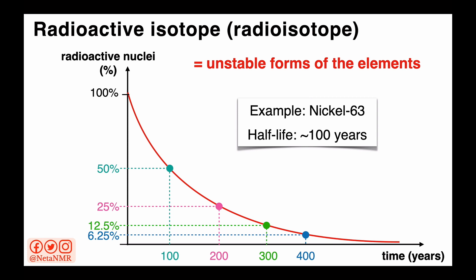And every new half-life, in the case of nickel-63, that is every new 100 years, the number of radioactive isotopes is reduced again to half of what it was 100 years before.